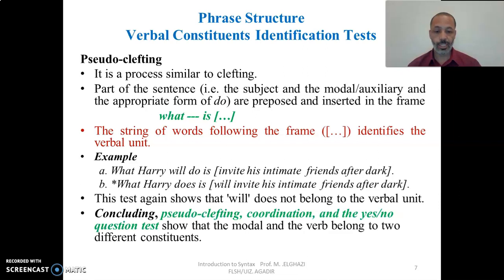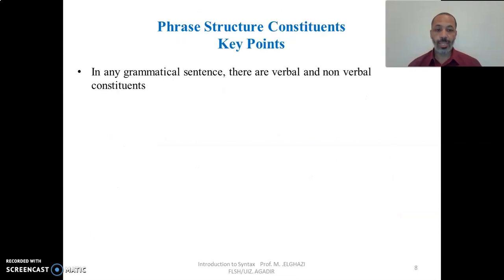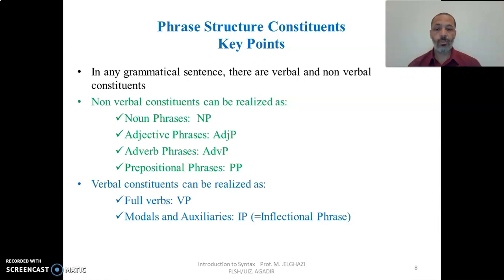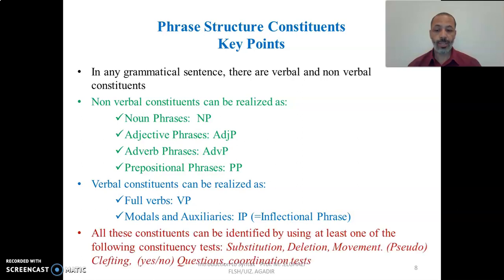To conclude, pseudo-clefting, coordination, and the yes-no question test all show that the modal and the verb belong to two different constituents. The key points to recall from these two lectures are: in any grammatical sentence there are verbal and non-verbal constituents. Non-verbal constituents can be realized as the noun phrase, adjective phrase, adverb phrase, and prepositional phrase. The verbal constituents include the VP and the IP — the inflectional phrase — which is a new category representing modals and auxiliaries, to be explained later. All these constituents can be identified using at least one of the following tests: substitution, deletion, movement, pseudo-clefting, yes-no questions, and coordination.